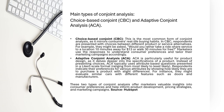ACA conjoint analysis is done by companies when they want to design a product in depth. Rather than presenting choices, ACA presents attribute questions in the form of Likert scales — from most likely to least likely. Respondents indicate their preferences for various attributes by showing how likely they are to purchase a product with slight differences. For example, similar cars with different features such as number of doors and manufacturer.